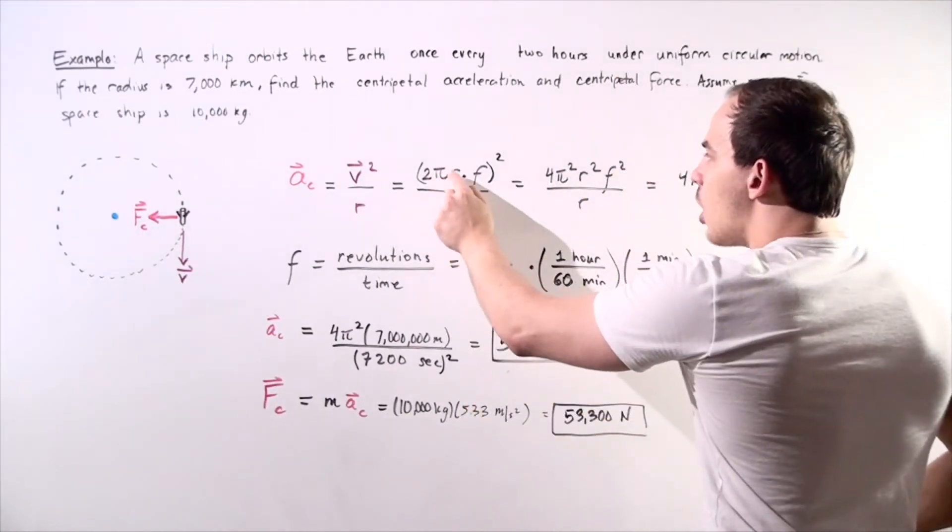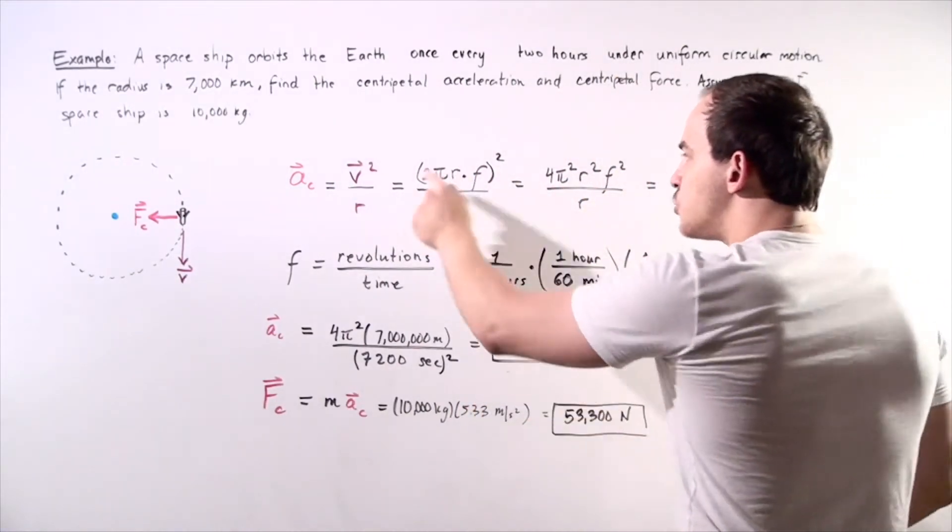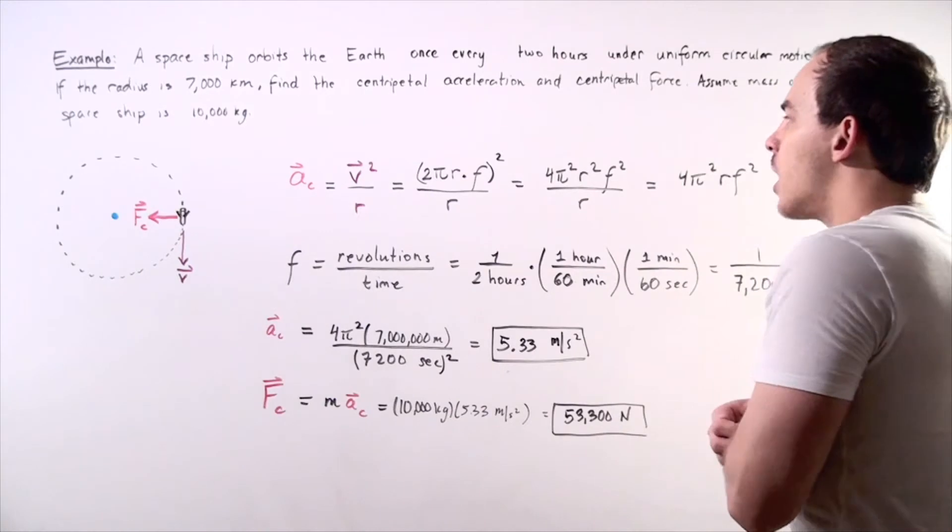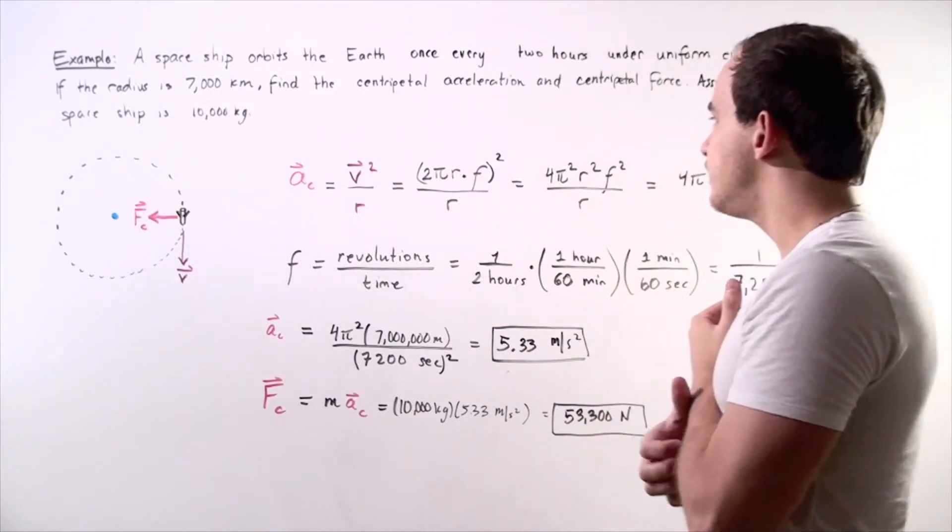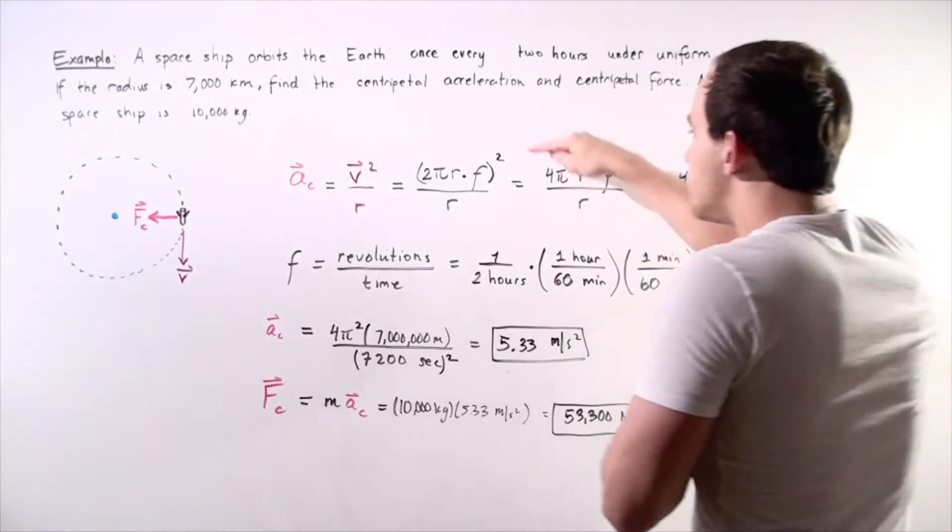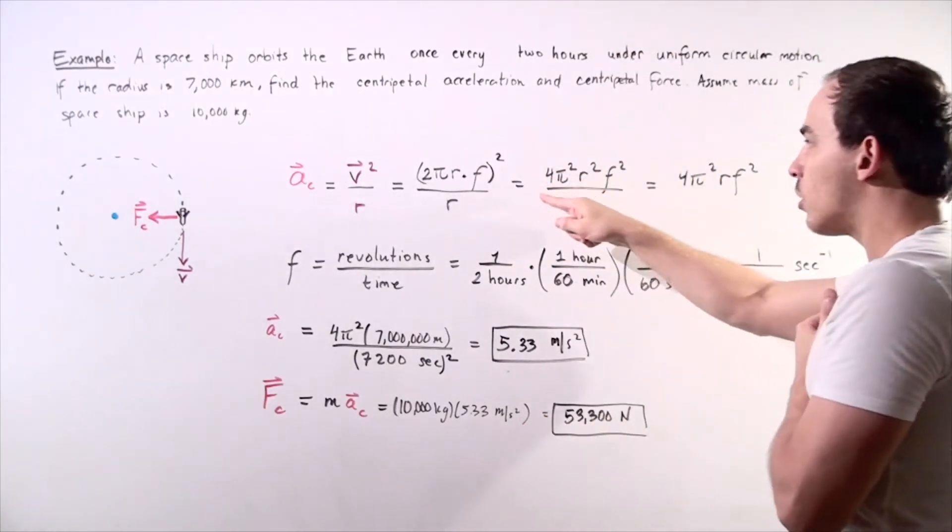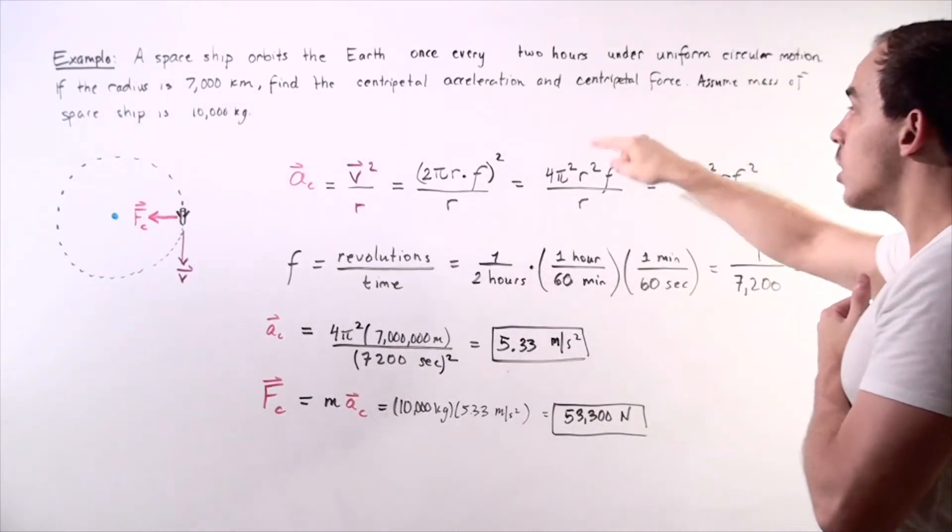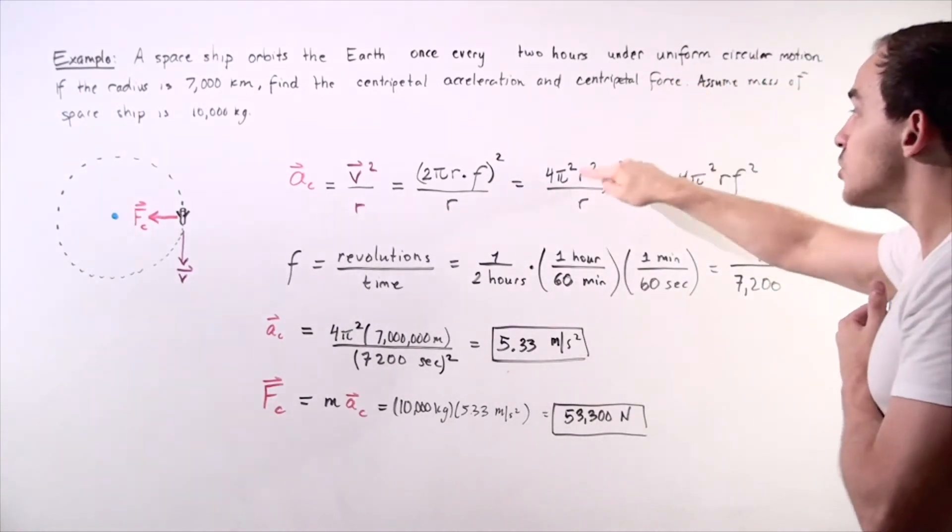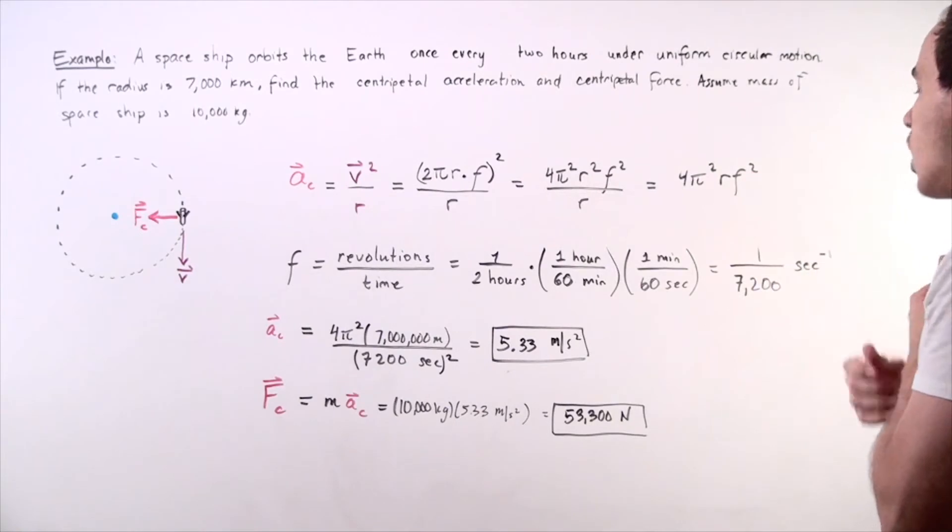2 pi R multiplied by F, where 2 pi R is our circumference. And we have to square this because our velocity is, in fact, squared. So we square every term, we get 4, because 2 times 2 is 4, pi squared, R squared, F squared, where R squared divided by R simply becomes R.